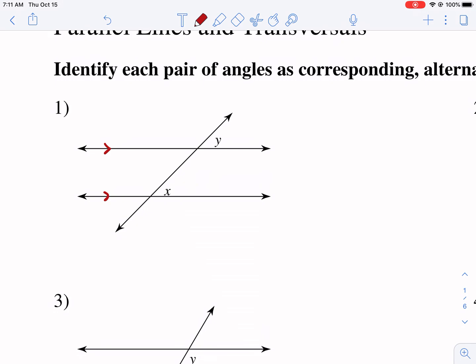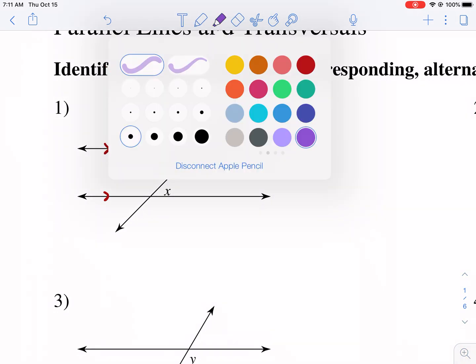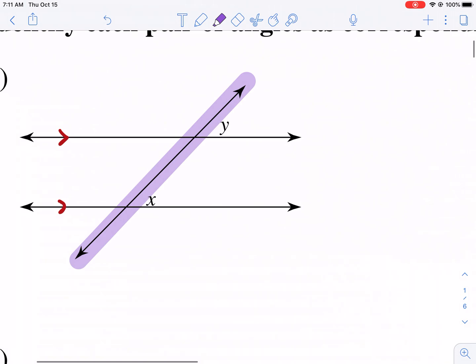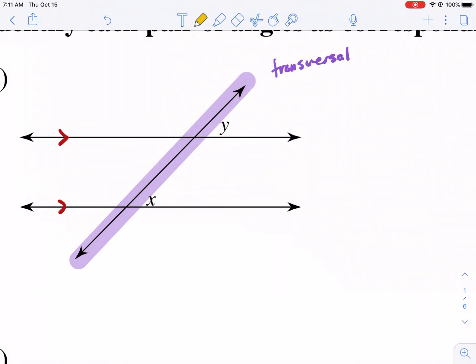The second thing we need to understand is this is called a transversal. A transversal goes through two or more lines. It intersects two or more lines. So the purple line is our transversal. A transversal will create multiple intersections, in this case two.